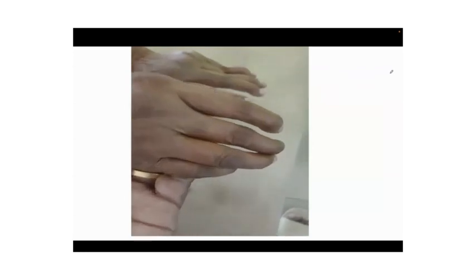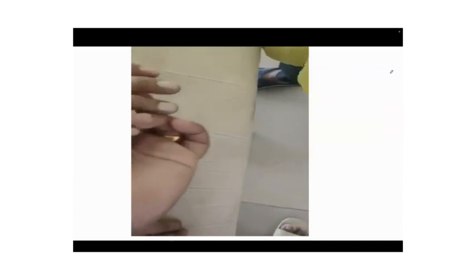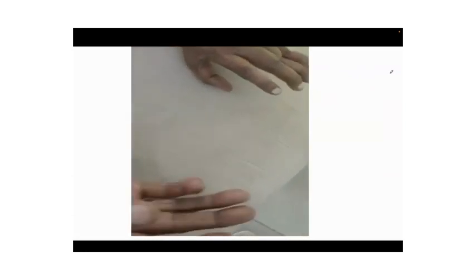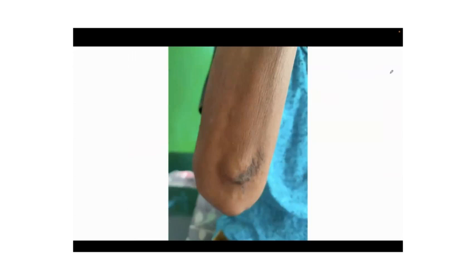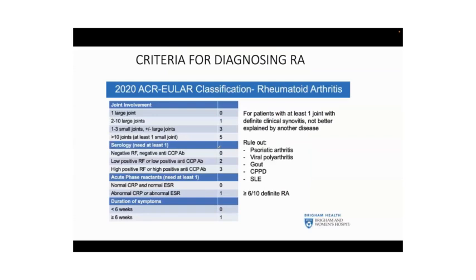Here is one of my patients with rheumatoid arthritis — you can see the boutonniere deformity and swelling of the joints. This next lady also has rheumatoid arthritis with rheumatoid nodules. Another patient with rheumatoid arthritis has eczematous lesions in the skin — and look at her toes as well.